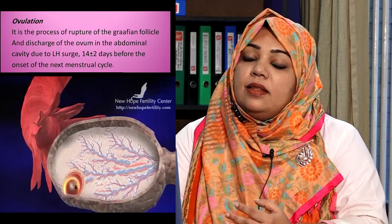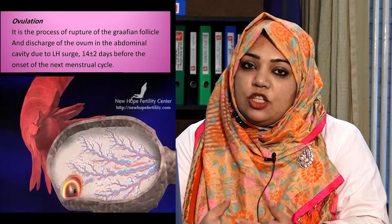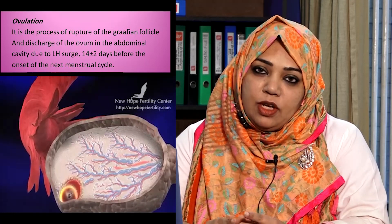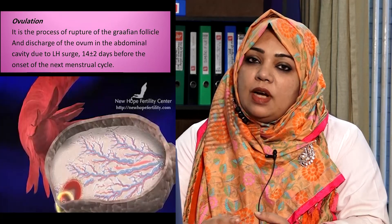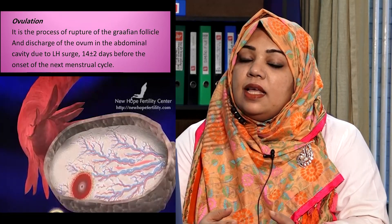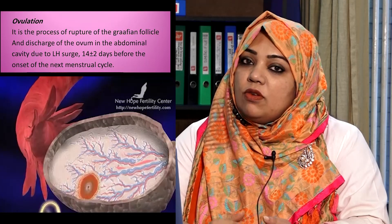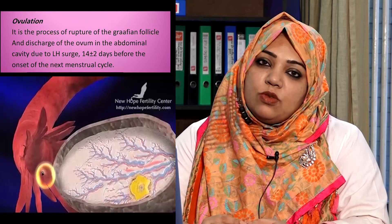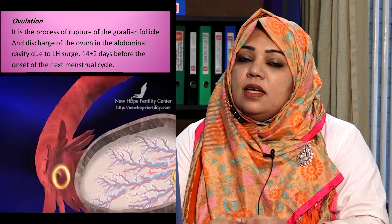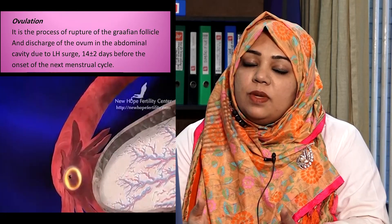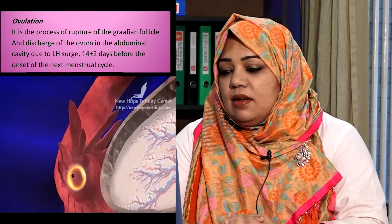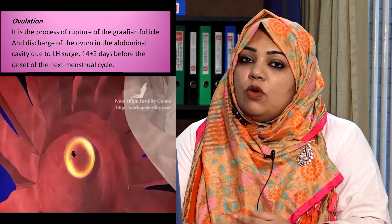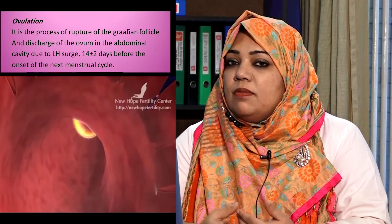At the end of the follicular phase, we had a mature follicle — one single dominant follicle known as the Graafian follicle — and this Graafian follicle ruptures and discharges the ovum in the abdominal cavity. The ovum is surrounded by the zona pellucida and corona radiata. After the ovum is discharged in the abdominal cavity, it is picked up by the fimbria of the fallopian tube. If there is a sperm, fertilization will occur; if not, the ovum is discharged with the menstrual blood.